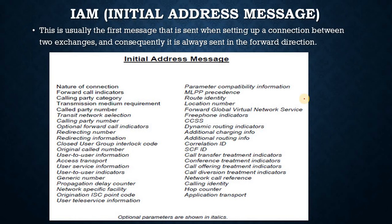The mandatory elements of IAM are used as follows. Nature of connection: contains information on the number of satellites in the connection, request for continuity check or echo control. Forward call indicators: includes interworking information, signaling system preferences (ISUP required, preferred, or not required), and indicators of subscriber access type (ISDN or not). Calling party category: identifies the type of calling subscriber, for example ordinary subscriber, pay phone, operator call, or test call. Transmission medium requirement: information on call type — speech, 3.1 kHz audio, 64 kbps unrestricted digital, and so on. Called party number: contains the number used to set up the connection, and the nature of the number and numbering plan indicator.